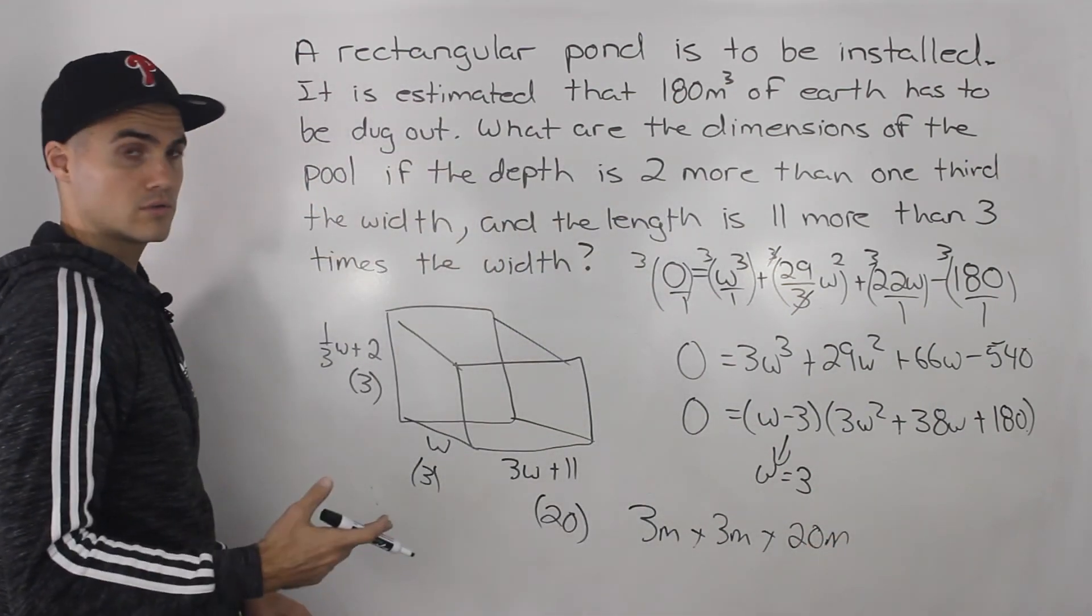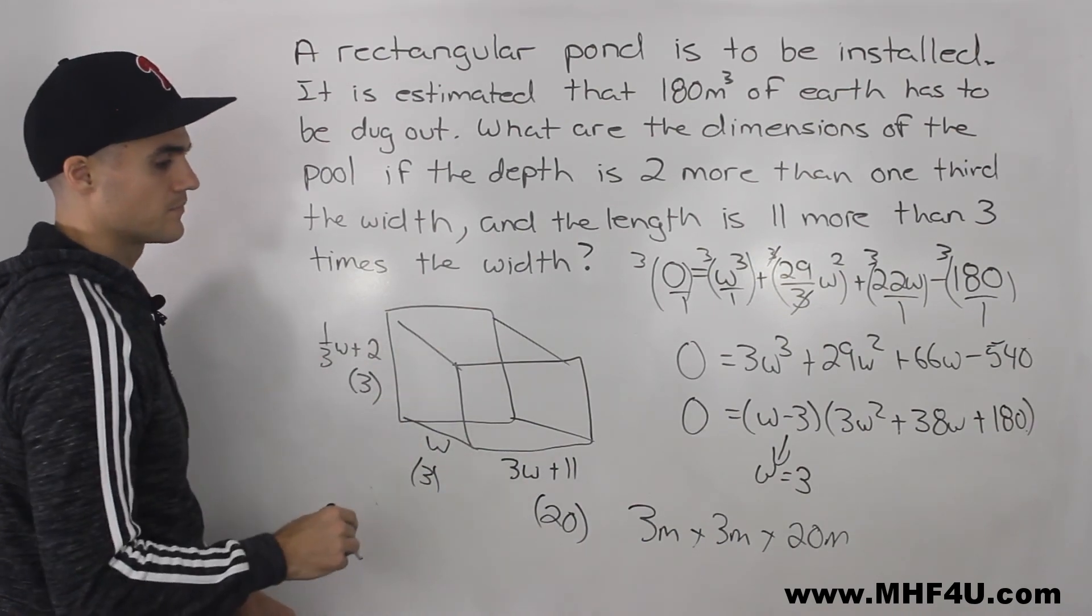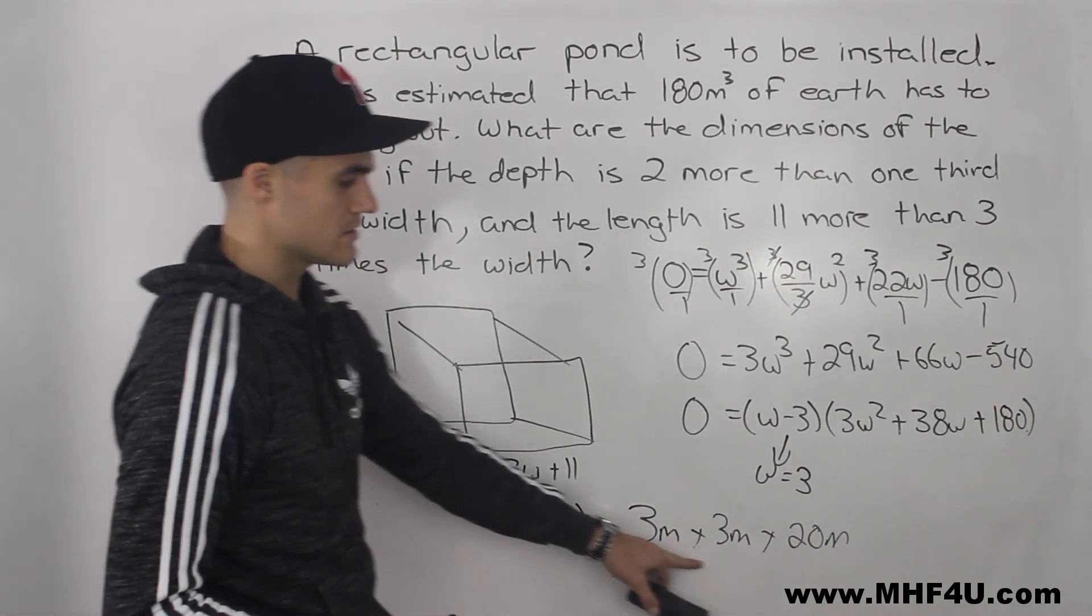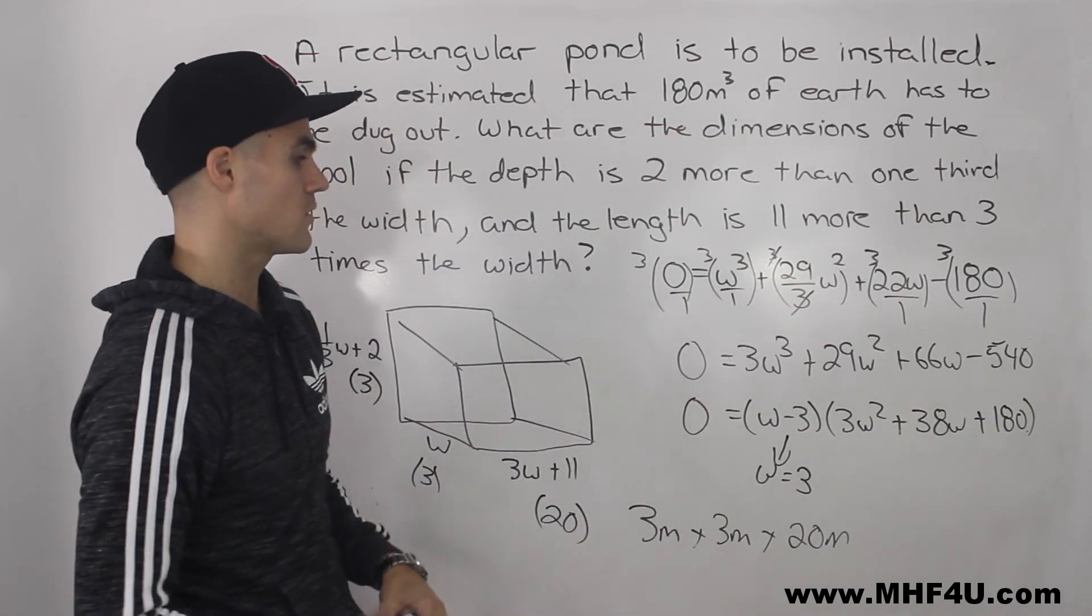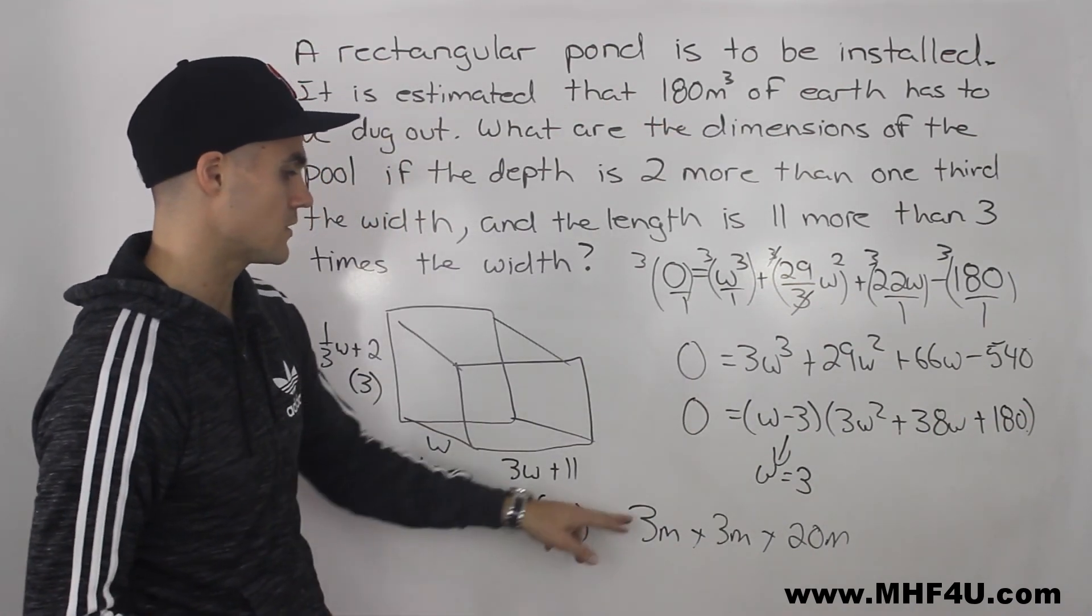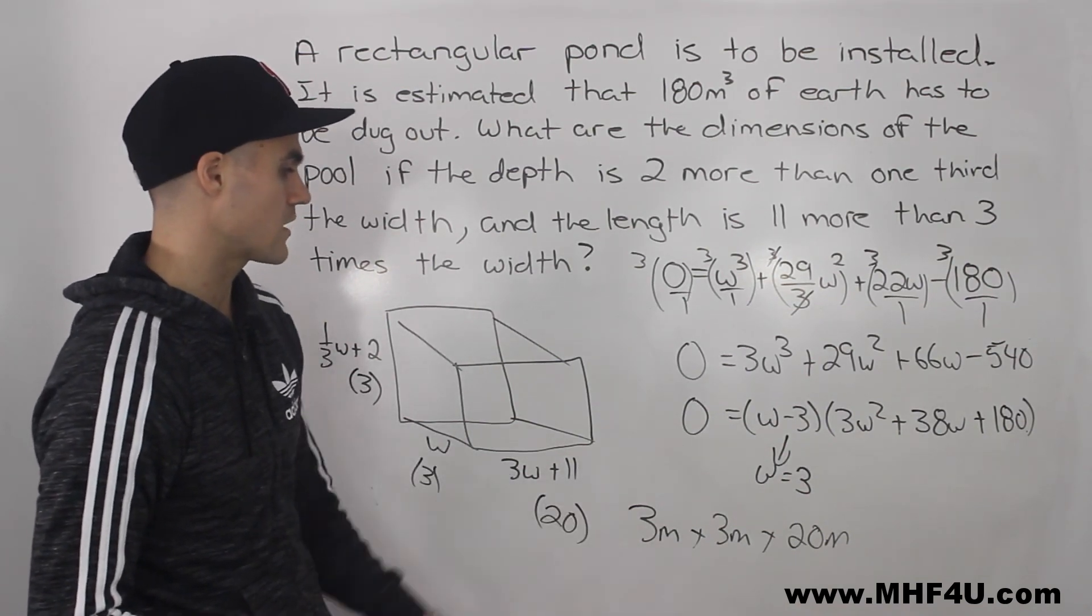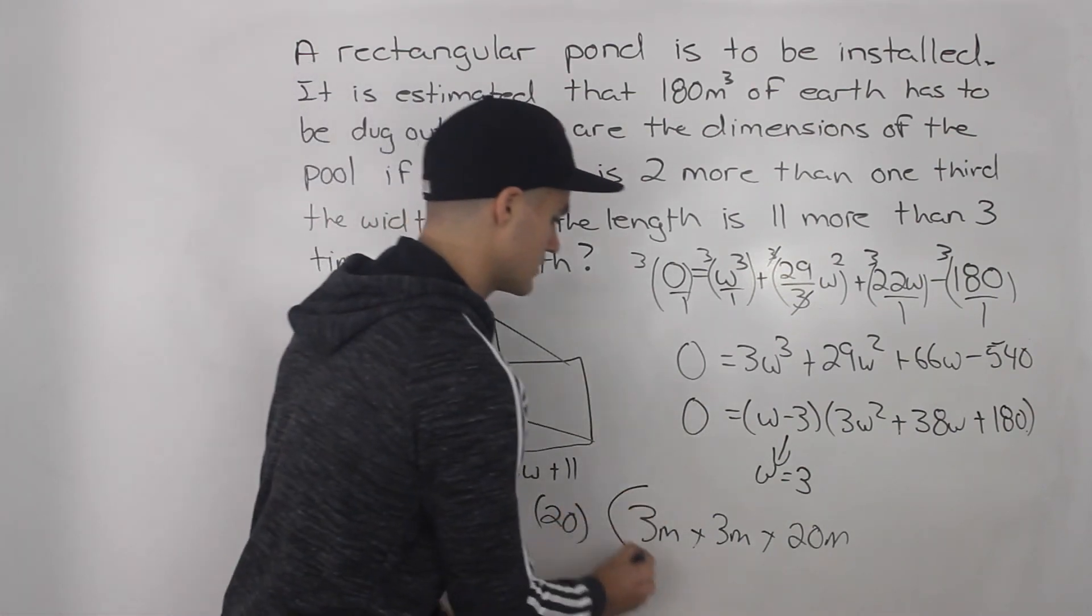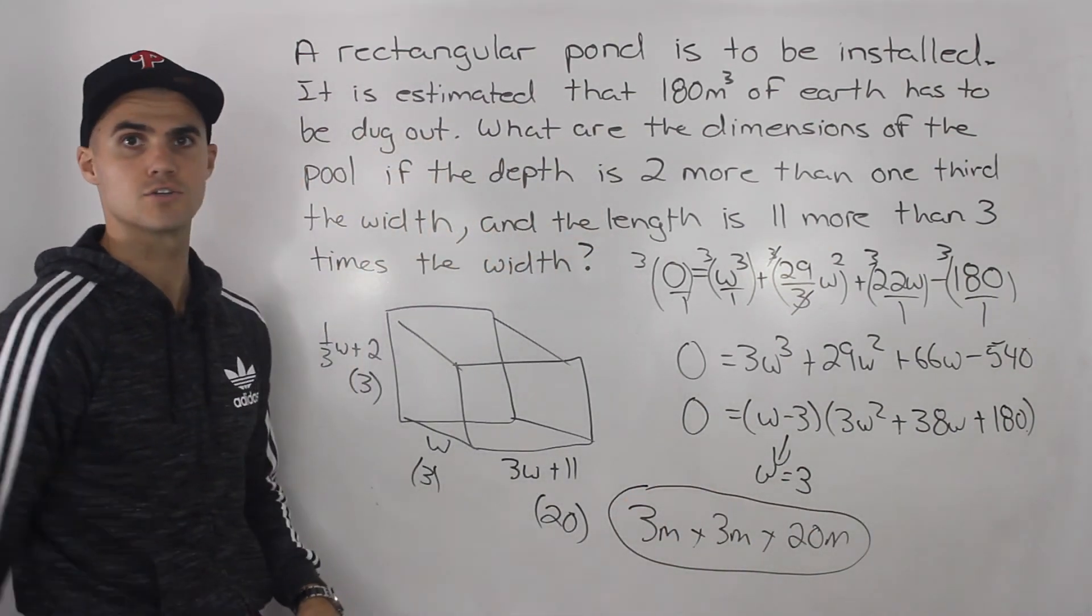That's the only solution to this problem. And if you actually take these, multiply them out, notice how you'll get 180 meters cubed, which is what we wanted initially anyway. So we can be fairly confident that this solution is correct. So that's your final answer. The dimensions of the pool are three meters by three meters by 20 meters.